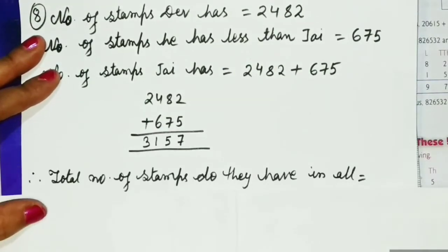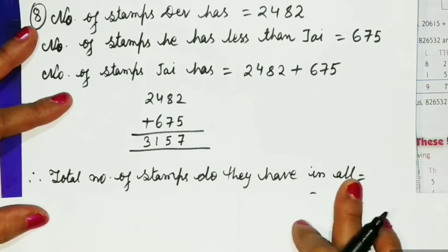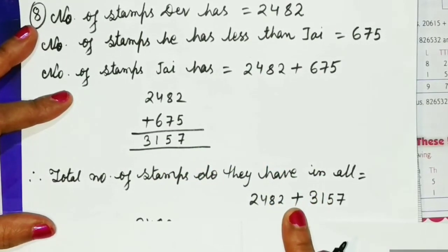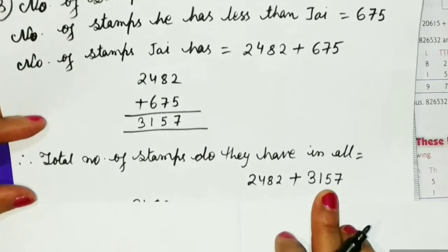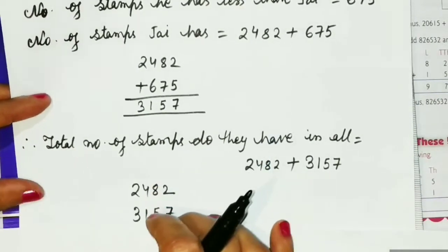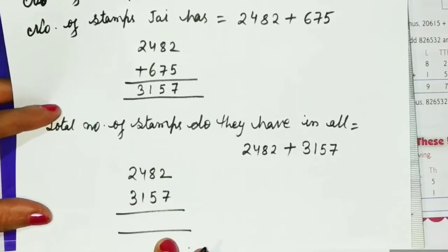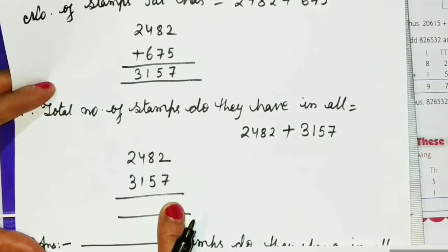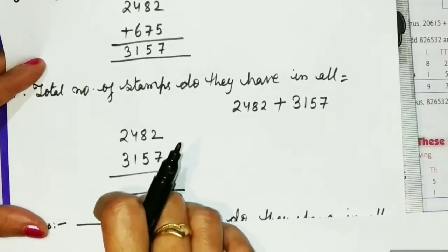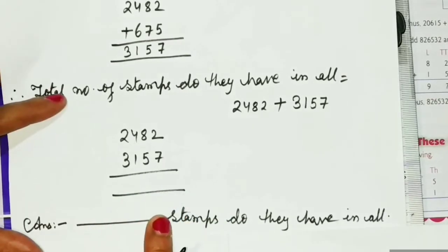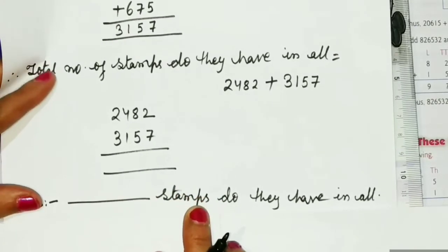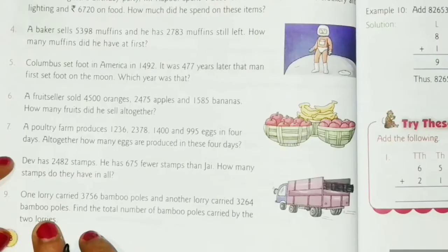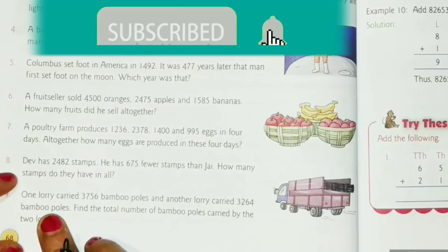Now we have to find the total number of stamps they have in all. For that we will add 2482 plus 3157. Children, I have left the addition for you — do the calculation and write the answer in this blank space. Write the same digit again and after that write 'stamps do they have in all.'